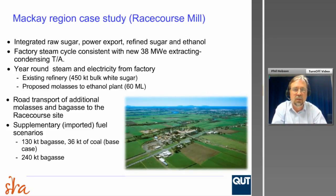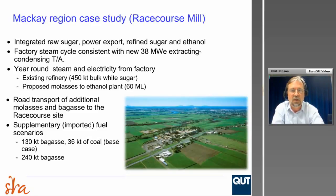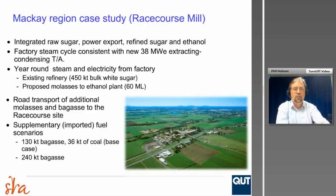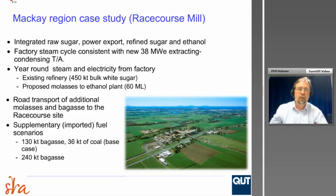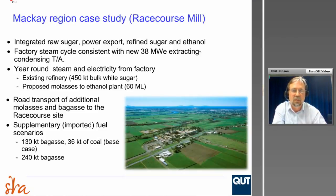Describing the Mackay Regional Case Study: this was an integrated process of raw sugar production, power export, refined sugar and ethanol. The factory steam cycle was consistent with the 30 MW extracting condensing set they have there. It assumes year-round steam generation and electricity production, and has to supply power and steam to the existing refinery producing 450 kilotons of bulk white sugar, and also assumes a proposed molasses-to-ethanol plant. Under some scenarios it's necessary to import gas from off the Racecourse site, and we looked at two fuel scenarios — one using coal as the base case, and the other introducing additional imported gas.